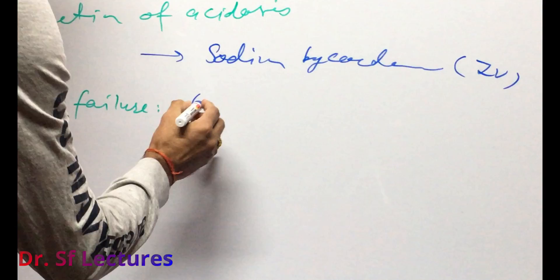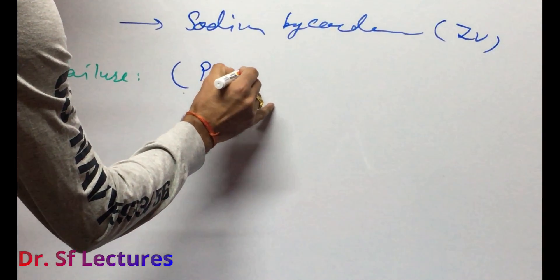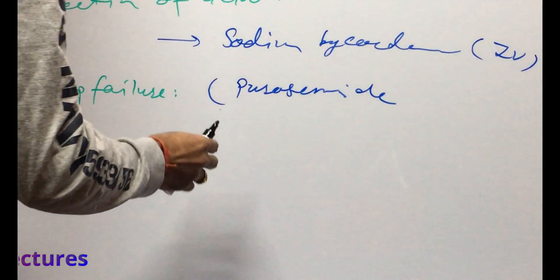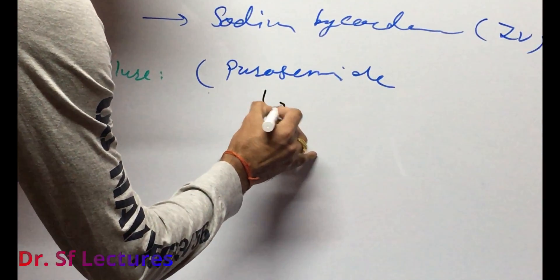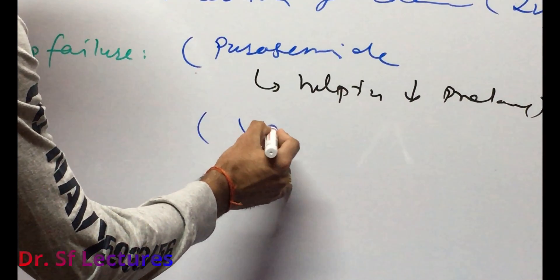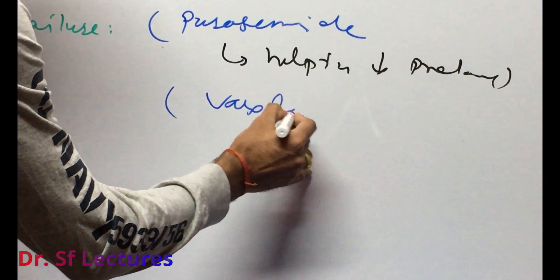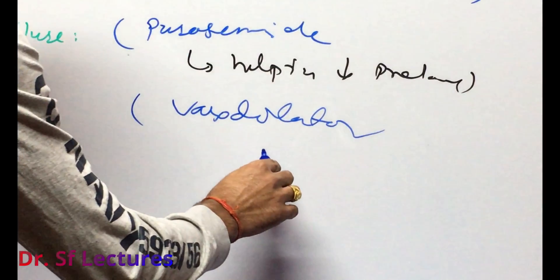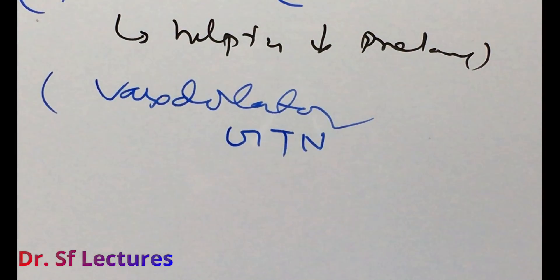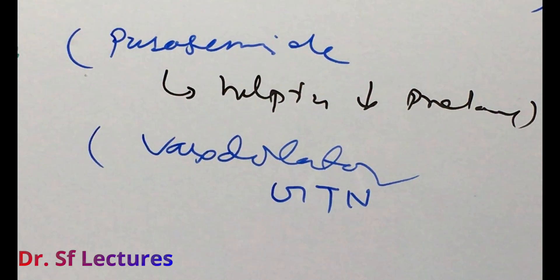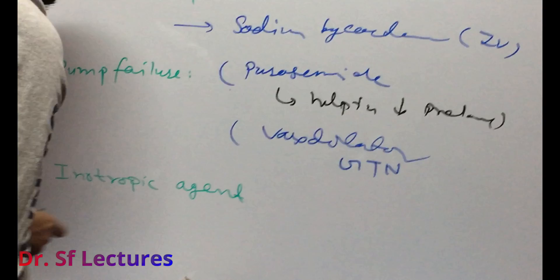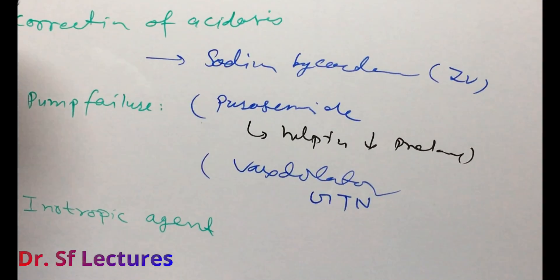In case of pump failure, we can use furosemide, which will help resolve the cardiac preload. We can also use a vasodilator like GTN (glyceryl trinitrate). We can also use inotropic agents like dopamine or dobutamine.